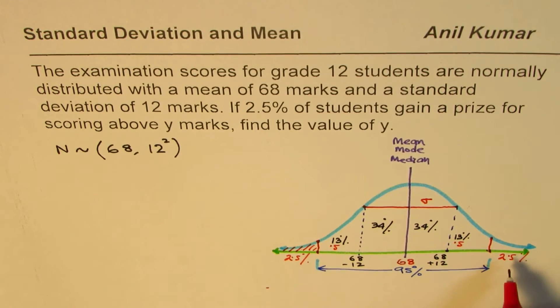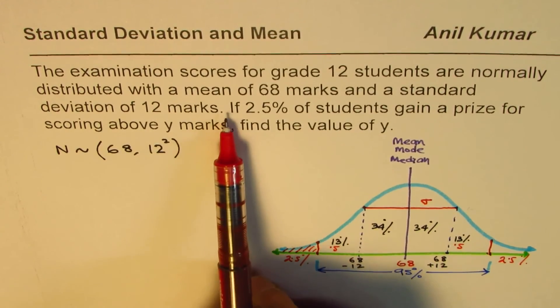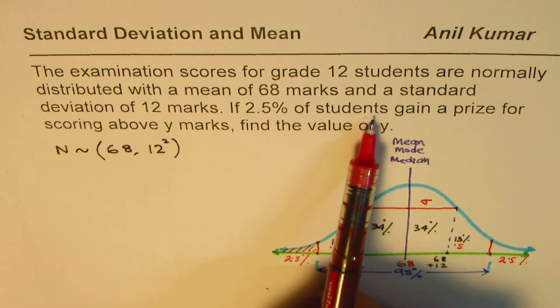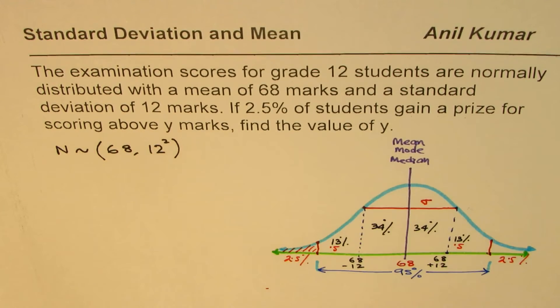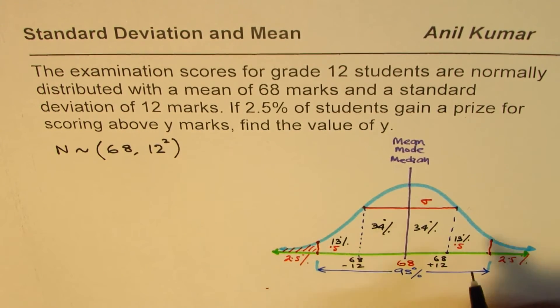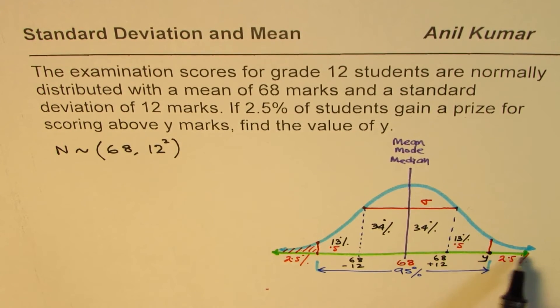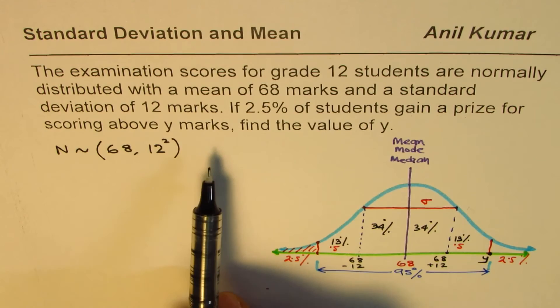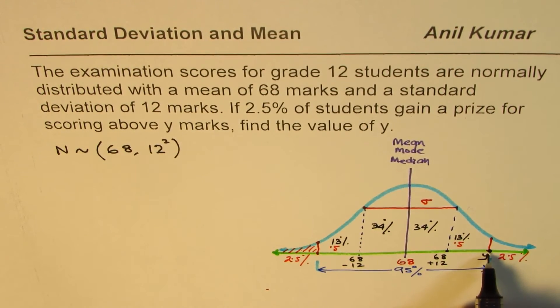If you look into the question, it says if 2.5% of students gain a prize for scoring above y marks, that means we are looking for this value. This value is y for us. Above this mark, then they get a prize. That is what we are trying to figure out.